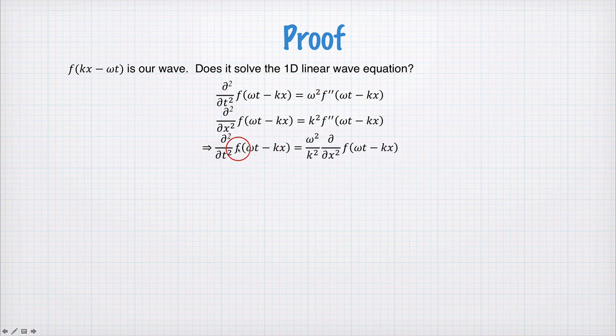You can see these two things are equal up to a factor of omega squared and k squared. So we can write that the second derivative with respect to time is equal to the second derivative with respect to space multiplied by omega squared on k squared. This is exactly the one dimensional linear wave equation, provided c squared is equal to omega squared on k.